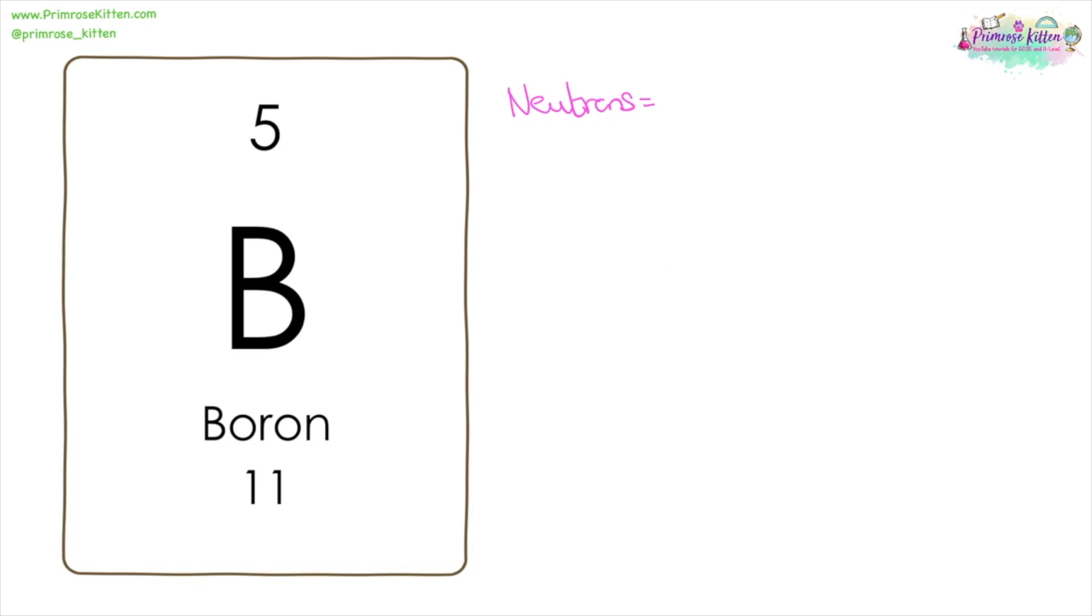Here we have boron. The mass number is 11, the atomic number is five. So if you want to find the number of neutrons, that is mass minus atomic: 11 minus 5 gives us 6. Protons equal five, electrons equal five.